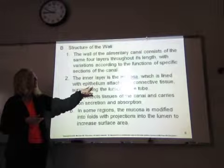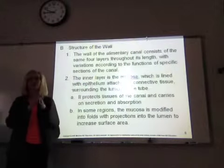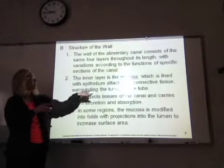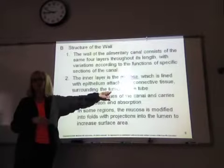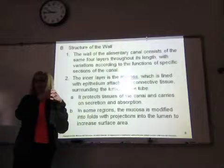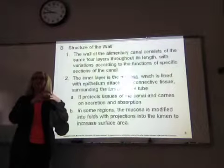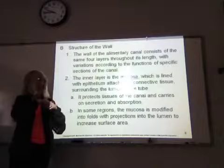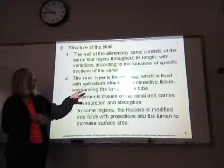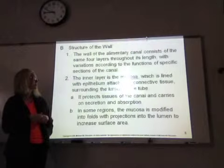It's lined with epithelium. It's attached to a connective tissue. And it surrounds the lumen. And if you remember, lumen means opening. So if we look at a diagram, the lumen is going to be white. It's the inside. And then the mucosa is what's going to surround that.